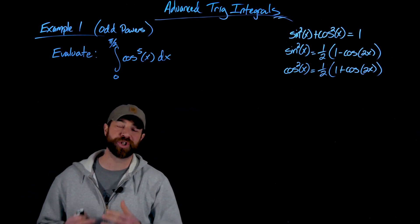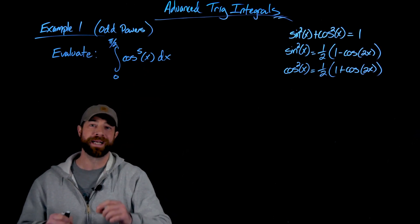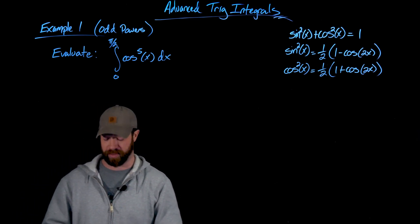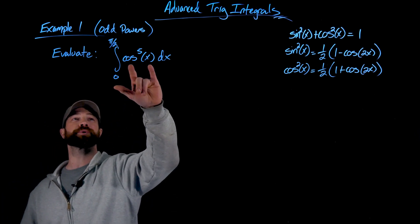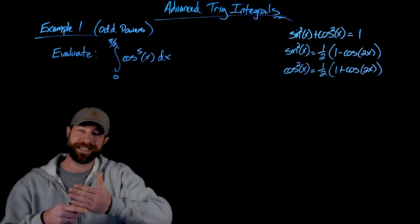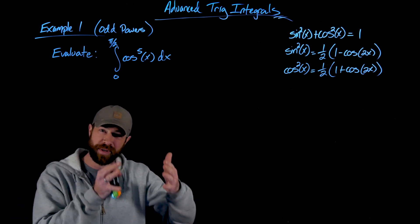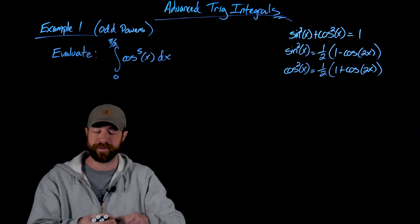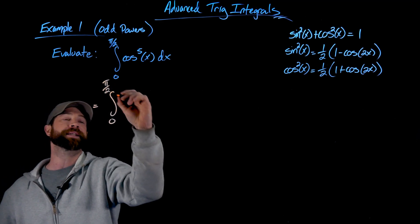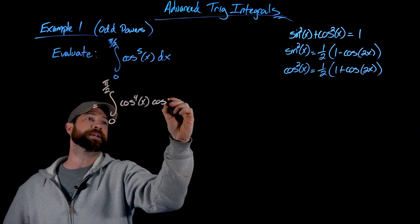In this first example, I'm going to generally talk about how to attack the integral of trig functions when you have an odd power. This can be used with cosine, sine, or other trig functions when you have an odd power. The first step is to rewrite cosine to the fifth as cosine to the fourth times cosine — you're extracting one power to get an even set of powers and then this cosine to the one power. All I'm going to do is separate this function into this.